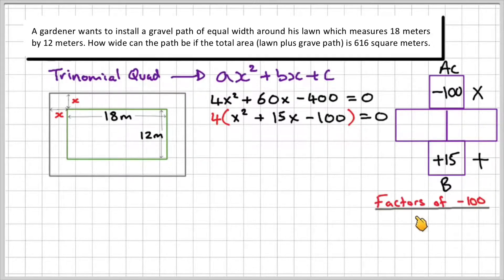So what I need then is two factors of minus 100 that multiply to give me minus 100 and add to give me plus 15. So I'll tell you what they are. So positive 20 times a negative 5 gives me negative 100. And then positive 20 plus negative 5 gives me plus 15. 20 minus 5 is 15. So those two work. So I can write plus 20 minus 5.